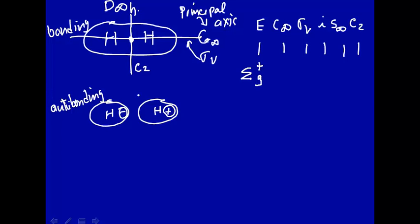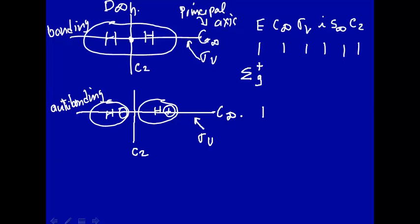Let's do the same for the antibonding orbital. Here is our principal rotational axis C∞, and here is our C2 axis perpendicular to that. The sigma v plane contains the principal rotation axis C∞ and comes out towards you into the screen. E — nothing happens. Rotation around the C∞ axis — nothing changes sign. This H is the same, this H is the same. The minus part of the orbital stays minus, the plus stays plus. So that's a +1. Sigma v — reflecting through that plane, no change in sign. Everything remains the same — that's also a +1.